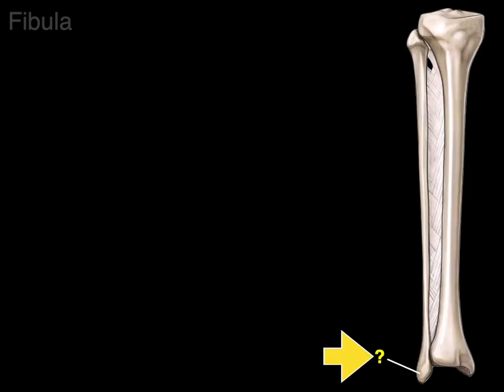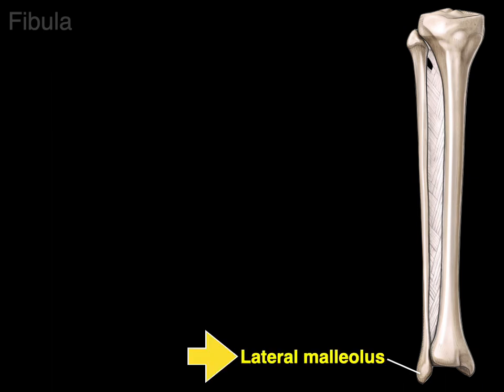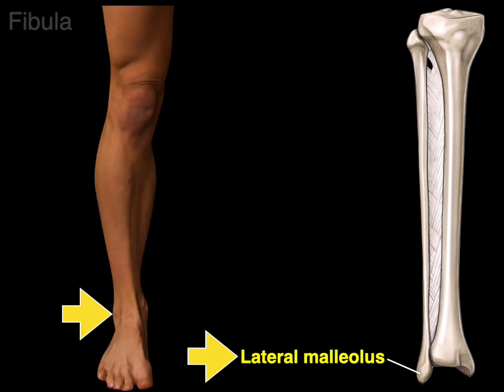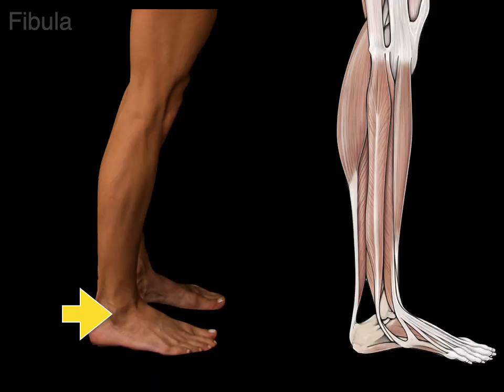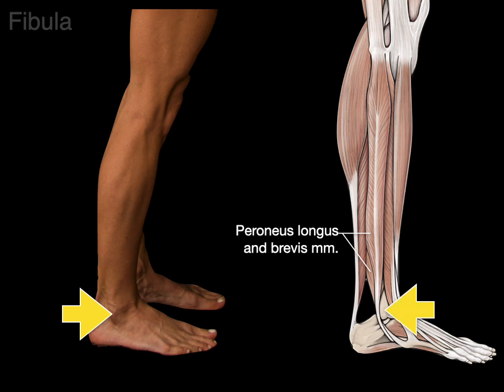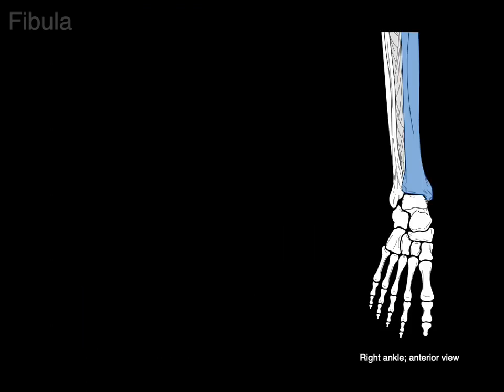On the lateral surface of the ankle, at the distal fibula, we have the lateral malleolus. In surface anatomy, if we pivot to see the lateral surface, the peroneus longus and peroneus brevis muscle tendons course posterior and inferior to the lateral malleolus.